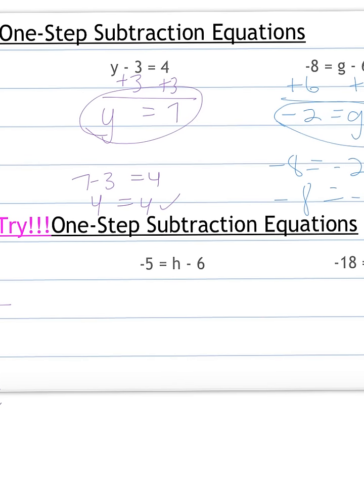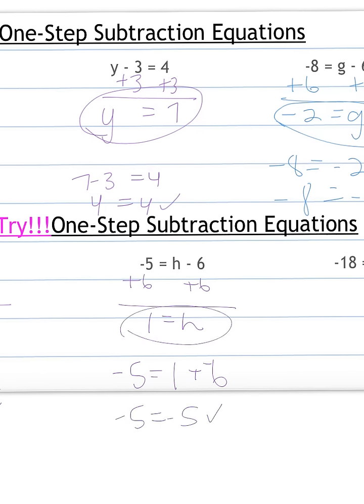Negative 5 equals H minus 6: add 6 to both sides to get H by itself. I do expect you to show each of these steps. Negative 5 plus 6: our signs are different, so we find the difference between them. The difference between 5 and 6 is 1, and we have more positives, so it's positive 1. Plug it back in to check: 1 minus 6, chop minus, gives us negative 5 on both sides. So that answer works: H equals 1.